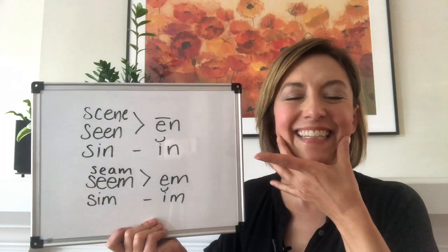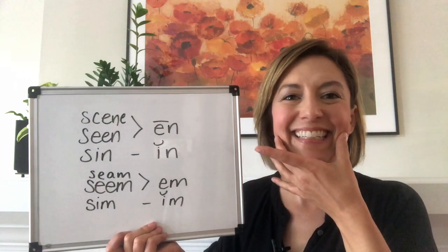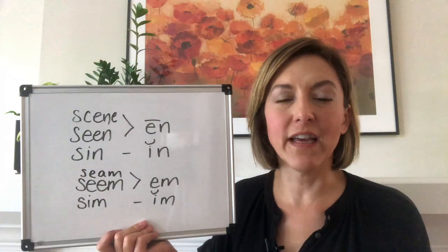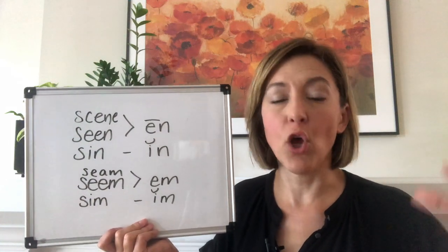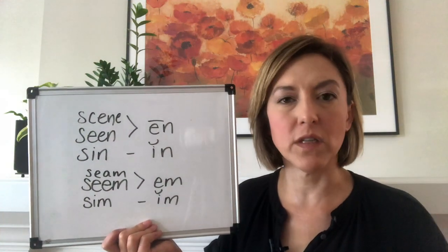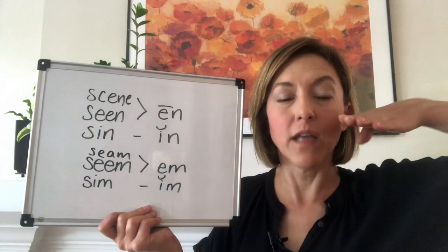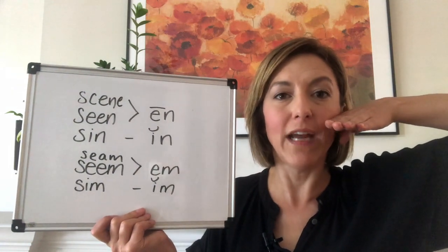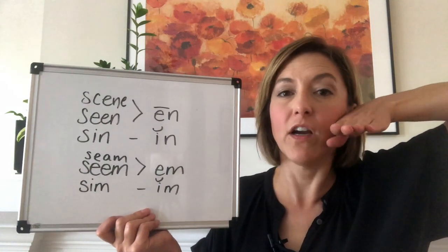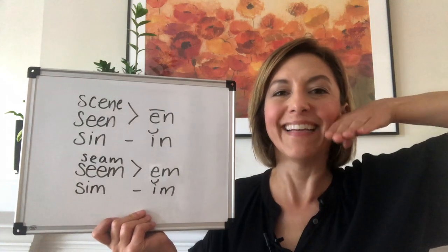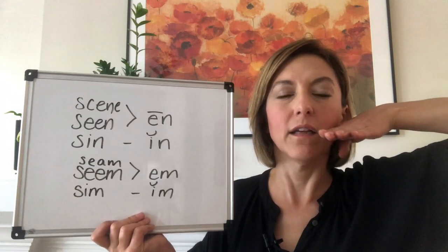So we have E versus I. You can see that difference: tense versus relaxed, really pulled back versus slightly pulled back. The tongue will go from E way at the top, way up here, to I.